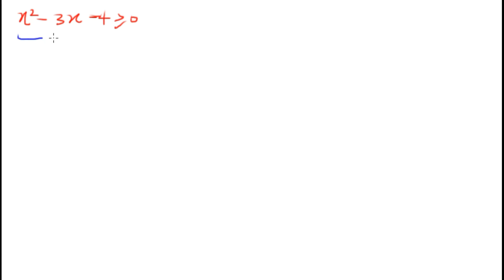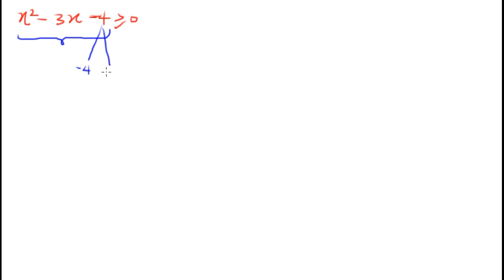The first thing to do is to factorize the quadratic expression. To factorize this quadratic, we need to think of two values whose product gives minus 4 and whose sum gives negative 3. We should be able to use minus 4 and plus 1, since minus 4 multiplied by 1 is minus 4, and minus 4 plus 1 is minus 3.